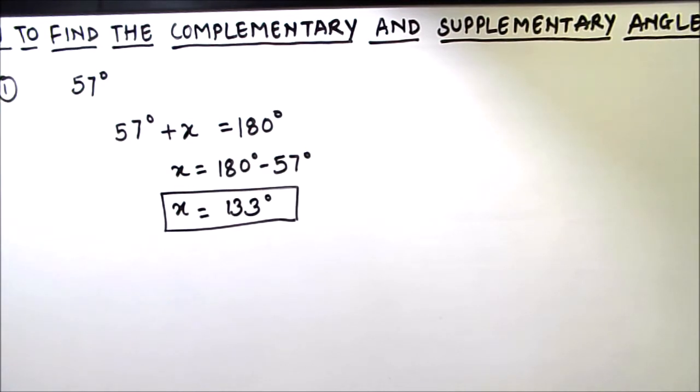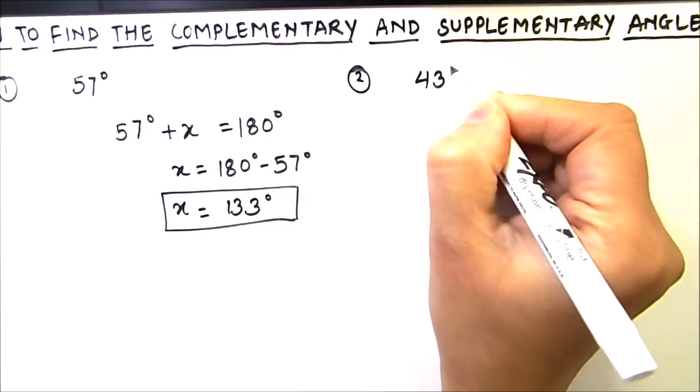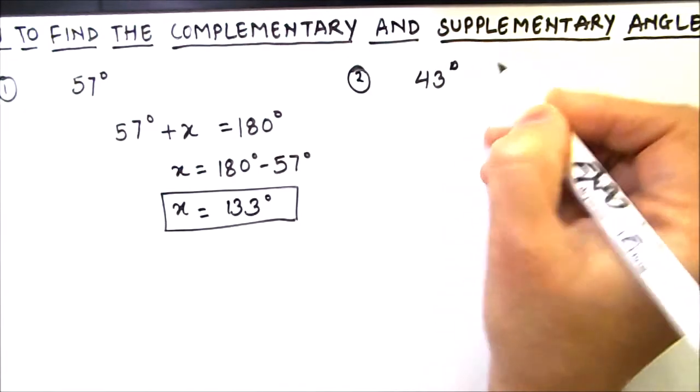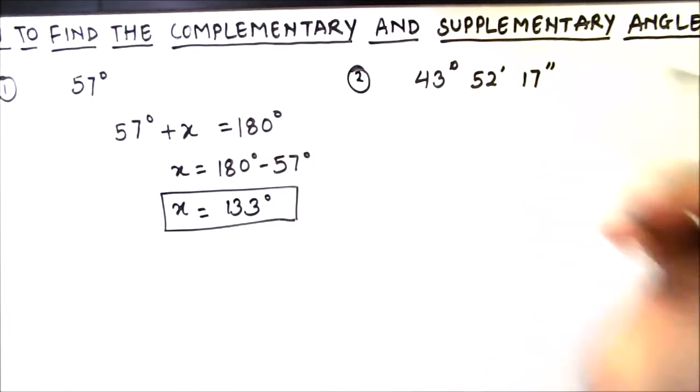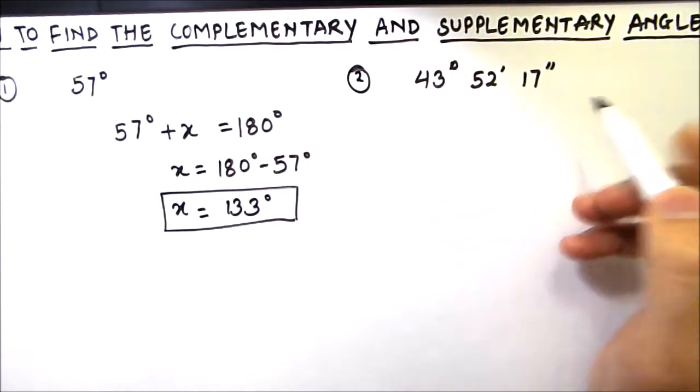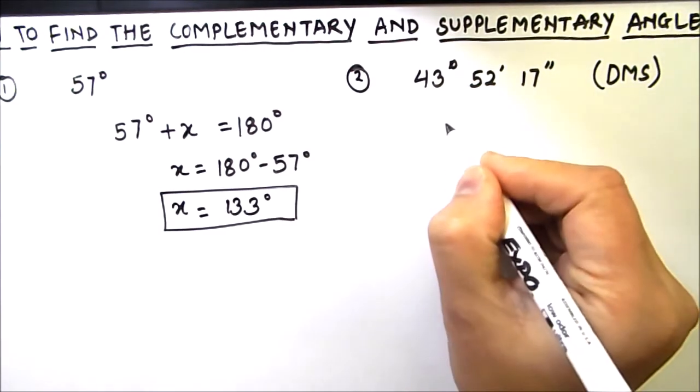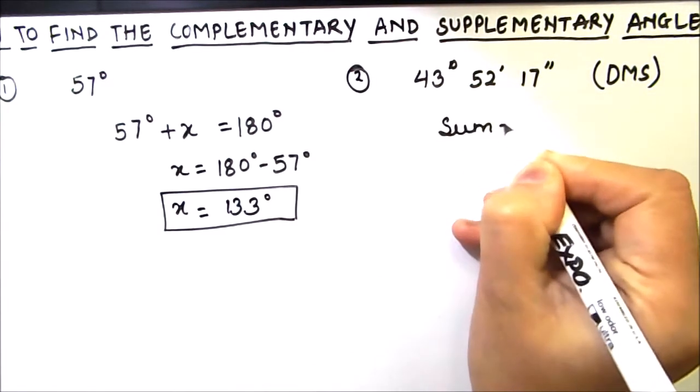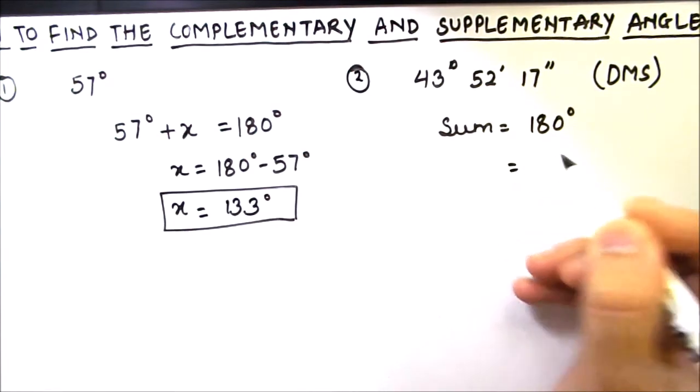Now let's find out the supplement to an angle which is 43 degrees 52 minutes and 17 seconds. So here this angle is given in DMS form. The two angles are said to be supplement to each other when their sum is equal to 180 degrees, but this is given in degrees. We need to convert it into DMS form.